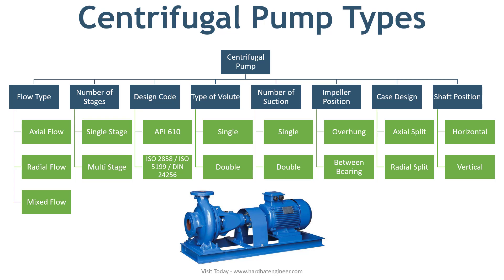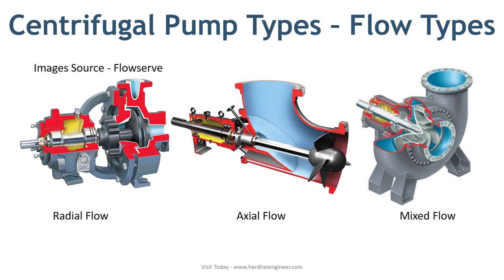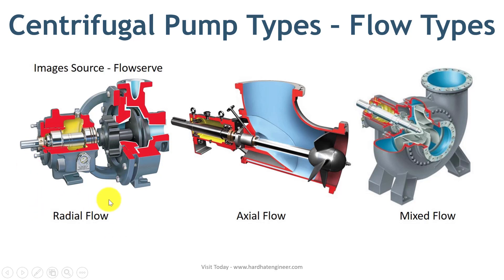Let's start with flow type. Depending on the flow type, a pump can be radial, axial, or mixed flow type. In radial flow, fluid takes a 90-degree turn from the suction — it enters at the impeller eye and exits radially from the impeller. Most centrifugal pumps come under this category. Fluid enters through the horizontal suction flange and leaves through the vertical discharge flange, meaning discharge is perpendicular to the pump shaft. This design is used for high pressure, low flow rate applications. Most pumps used in oil and gas fall into this category.